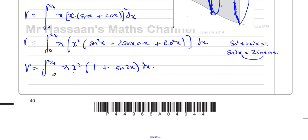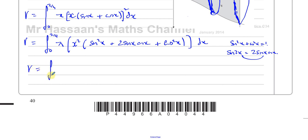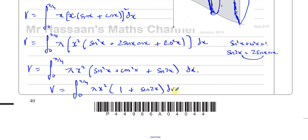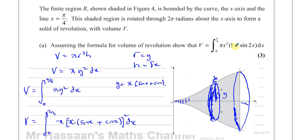Because the question already gave us the answer, I'll make sure to show all the steps clearly. To be sure, you could write sine squared x plus cosine squared x equals 1, then substitute, giving v equals the integral between 0 and pi over 4 of pi x squared times (1 plus sine 2x) dx — which is exactly what we needed to show. That's part A.